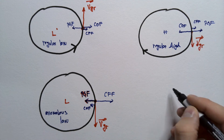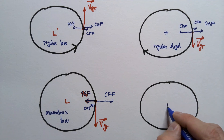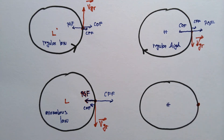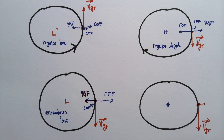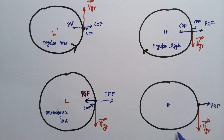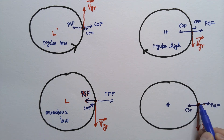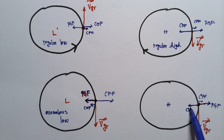Fourth, the anomalous high: high pressure in the center, gradient wind is counterclockwise. Pressure gradient force acts outward (high to low), Coriolis force is to the right of the motion pointing inward, and centrifugal force also acts outward. Coriolis force must balance the other two. This is called the anomalous high.